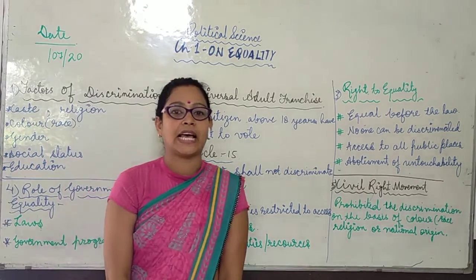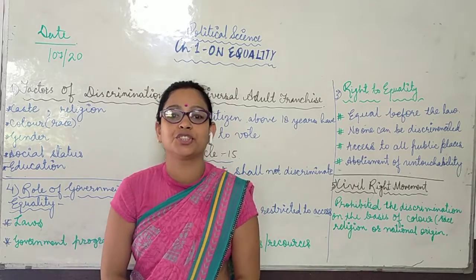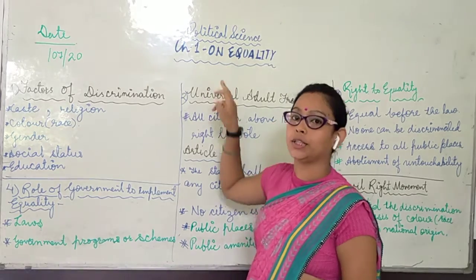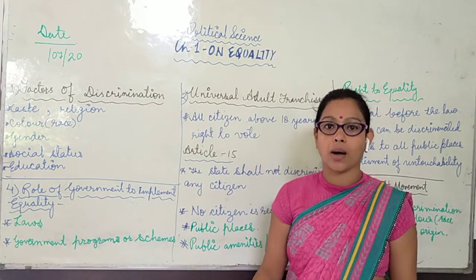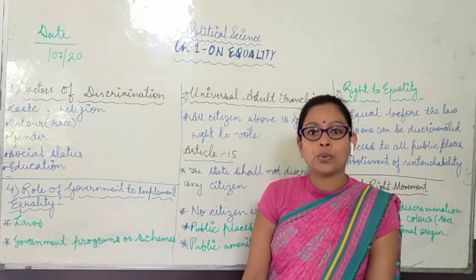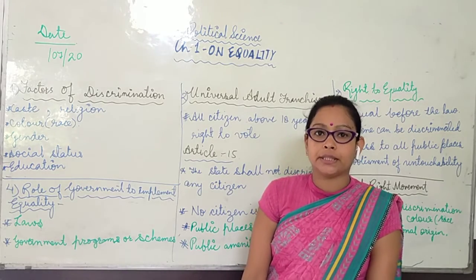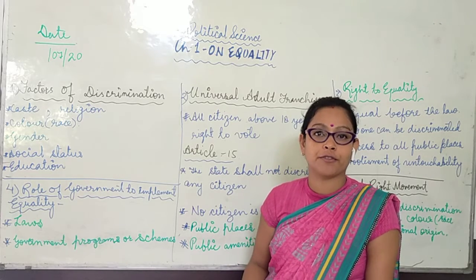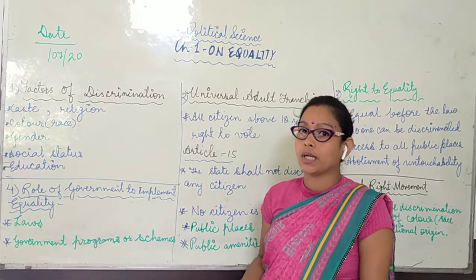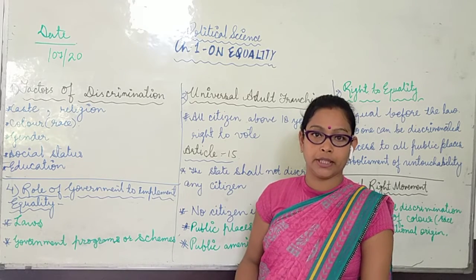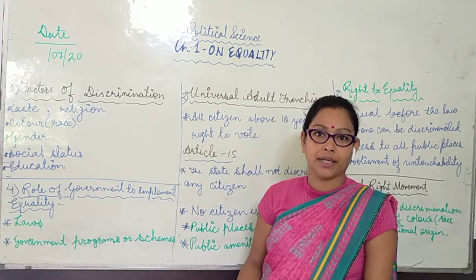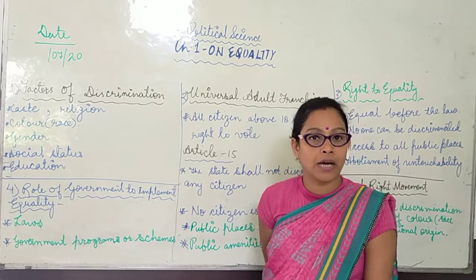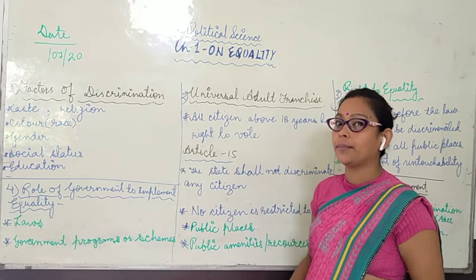Good morning dear students and welcome back to chapter one of political science on equality. In the last session we read about three stories of people who were treated unequally — on the basis of their social class, on the basis of being rich or poor; the Ansaris who were discriminated on the basis of their religion; and Om Prakash Valmiki who was discriminated on the basis of his caste as he belonged to a Dalit family.